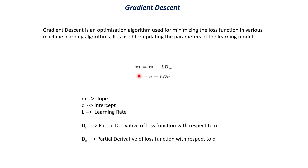We do that using this particular formula, which is very important because we will implement it in Python. The formula is: m = m − L*dm and c = c − L*dc, where m is the slope, c is the intercept, L is the learning rate, dm is the partial derivative of the loss function with respect to m, and dc is the partial derivative of the loss function with respect to c. Let's understand each of these terms.